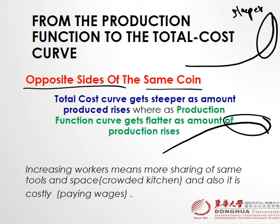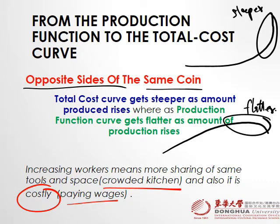The production function becomes flatter as the amount of production rises. The meaning is that increasing workers means more sharing of the same tools and space — like a crowded kitchen — and it is costly. Because we cannot increase the size of the factory, we can only increase production by adding workers, so with limited space output growth slows.